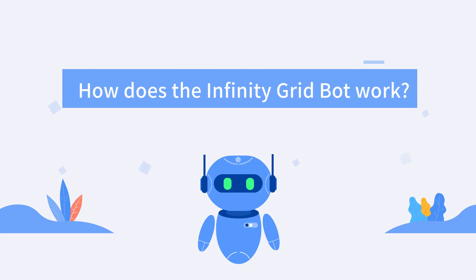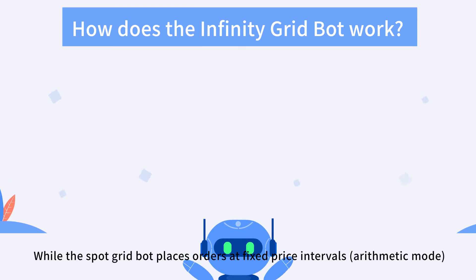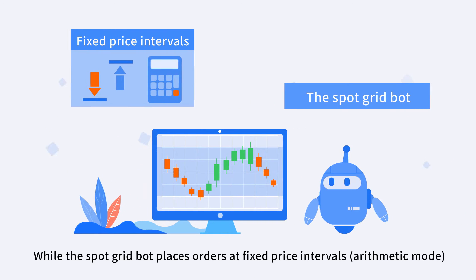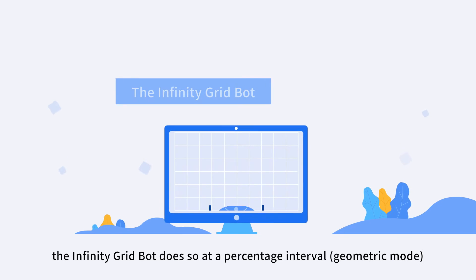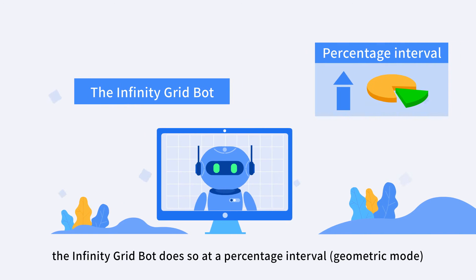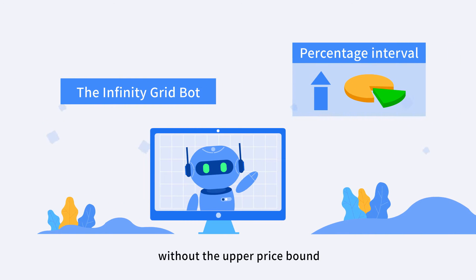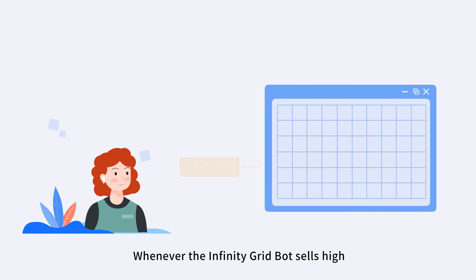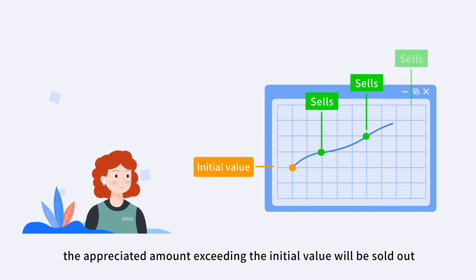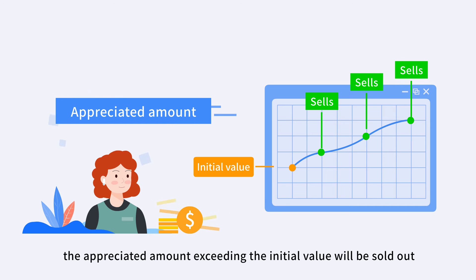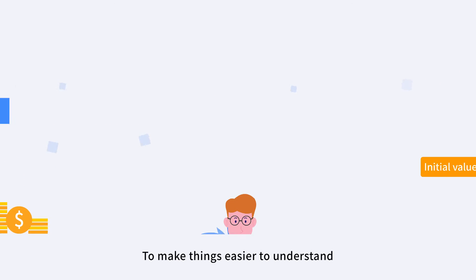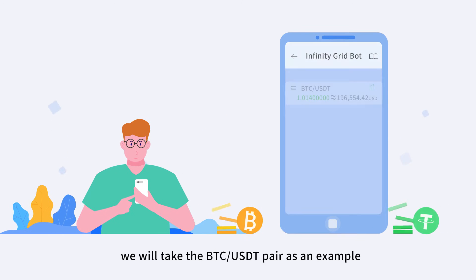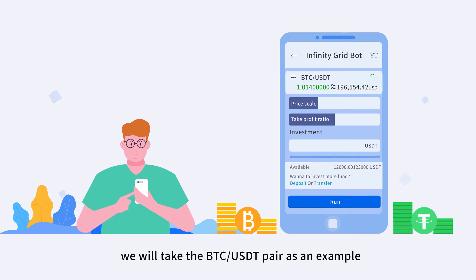How does the Infinity Grid Bot work? While the Spot Grid Bot places orders at fixed price intervals, the Infinity Grid Bot does so at a percentage interval without the upper price bound. Whenever the Infinity Grid Bot sells high, the appreciated amount exceeding the initial value will be sold out. To make things easier to understand, we will take the BTC-USDT pair as an example.